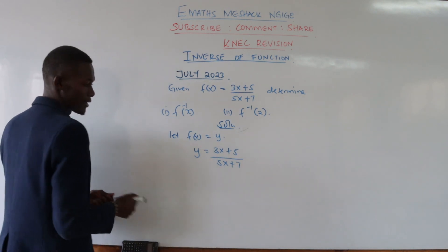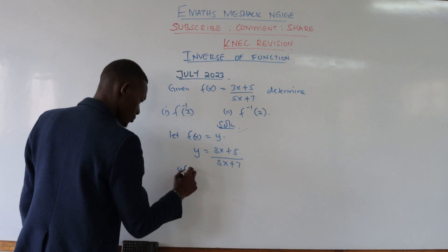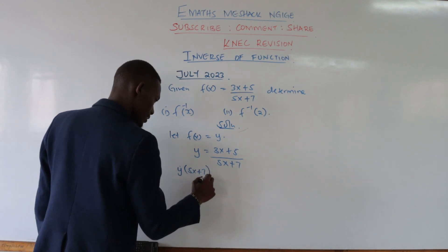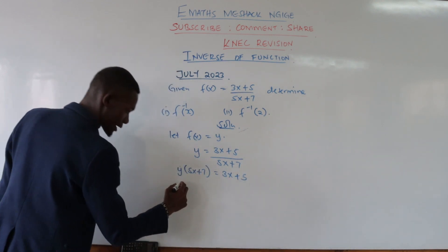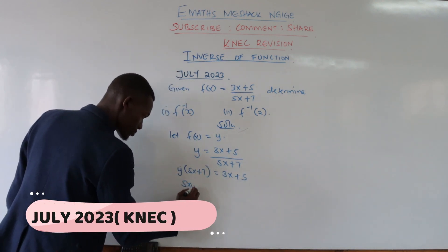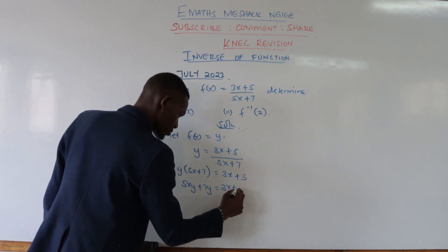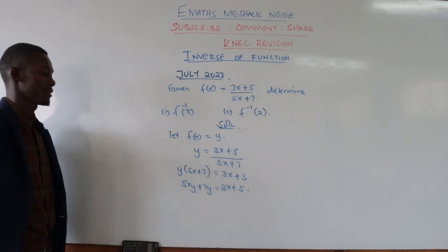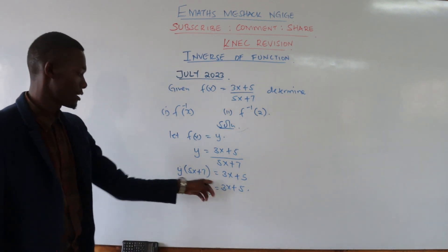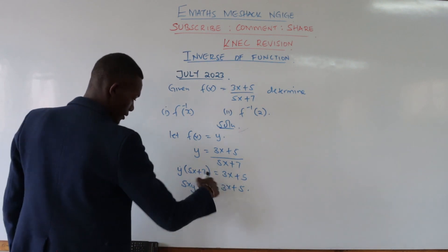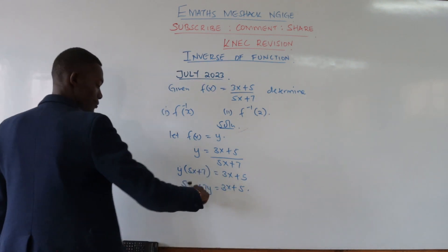To make x the subject of the formula, we start by multiplying both sides by 5x plus 7. So we shall have y multiplied by 5x plus 7 equals 3x plus 5. Opening the bracket, we shall have 5xy plus 7y equals 3x plus 5. Then we take the terms that have x on one side. So we have 5xy on the left side.